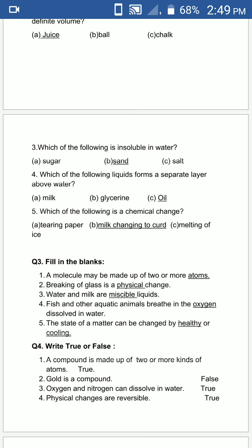Fifth is which of the following is a chemical change? Is mein se kaun sa chemical change hai? A. Tearing paper. B. Milk changing to curd. C. Melting point of ice. The answer is milk changing to curd. It is a chemical change. We already discussed this in the chapter.